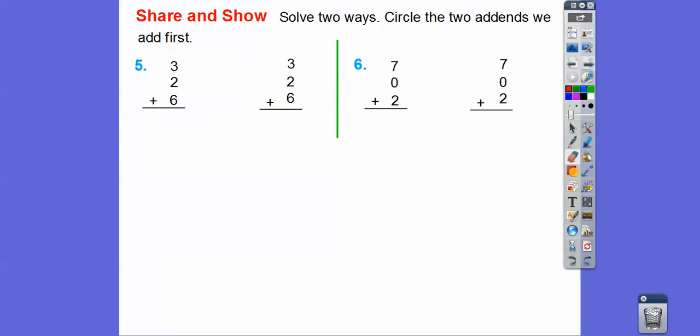All right, sometimes they have them like this, and they want us to... So I'll circle the top two numbers first, so let's circle three plus two. Three plus two equals five, and five plus six is one more than five plus five, so it's going to be eleven. Okay? What if we grouped these two guys together? Two plus six is eight. Three plus eight, eight, nine, ten, eleven. Okay? So we get eleven.